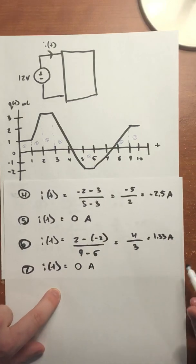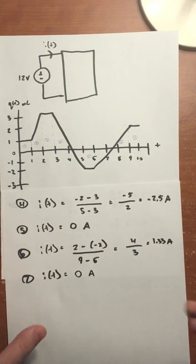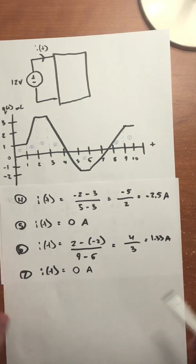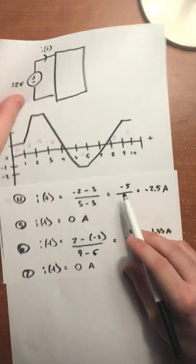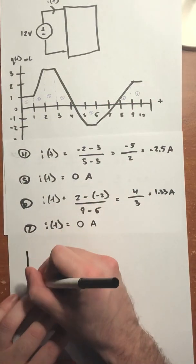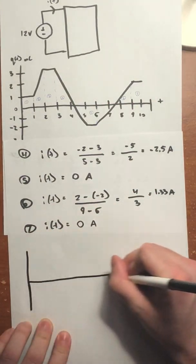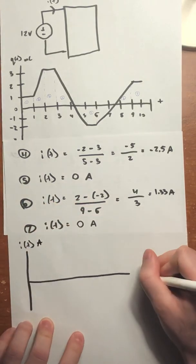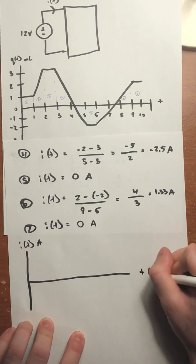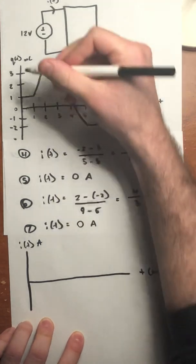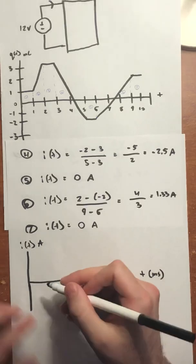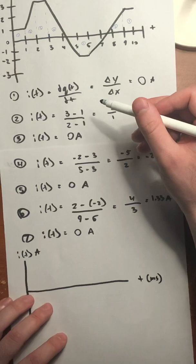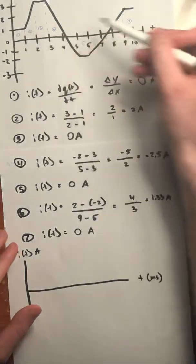Now that we've found the current for each section, we can graph it. We graph current in amps vs. time in milliseconds, using the same time intervals as before.